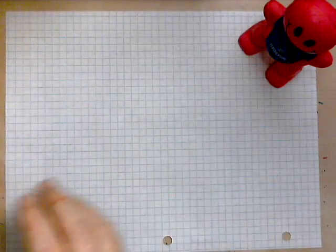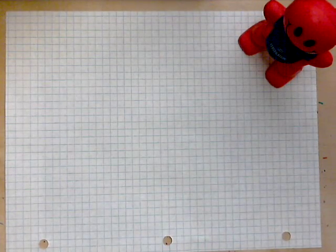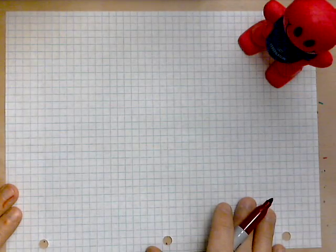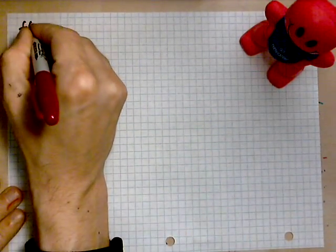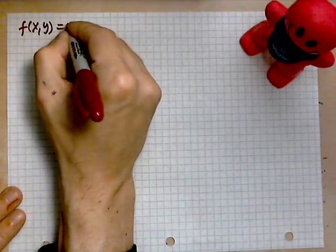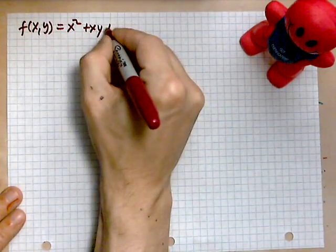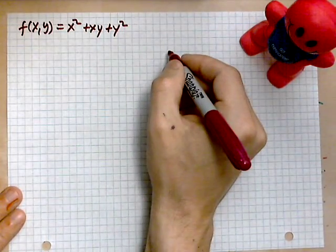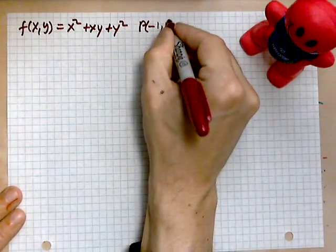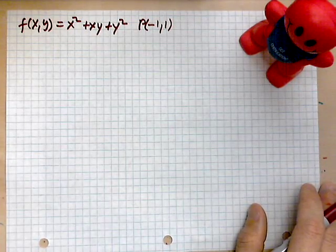The function we will use is f(x,y) = x² + xy + y², and the point we are given is negative 1 comma 1. What we want to do is find the direction of most rapid increase or decrease.